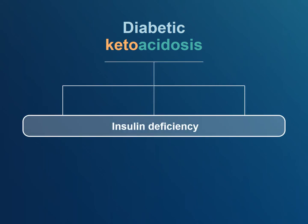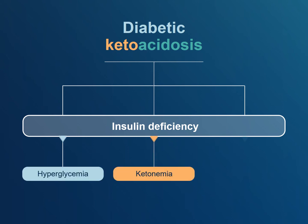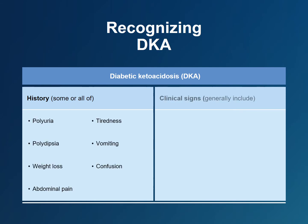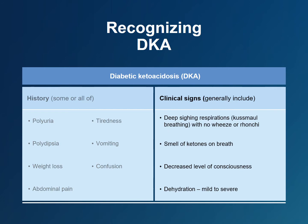The root cause of DKA is insulin deficiency. Insulin not only lowers blood sugar, it prevents the formation of acidic ketones in the circulation. Without insulin, as occurs in type 1 diabetes, one develops hyperglycemia, ketonemia, and metabolic acidosis. Symptoms of DKA include polyuria, polydipsia, weight loss, abdominal pain, fatigue, vomiting, and confusion. Signs of DKA may include deep rapid breathing called Kussmaul's respirations, fruity breath which is a sign of ketones — specifically acetone building in the blood — hypovolemia, and decreased level of consciousness.